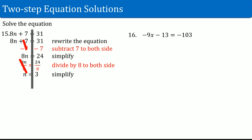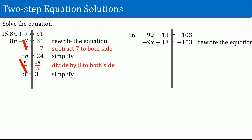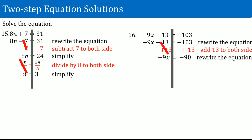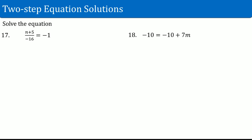Number sixteen: negative 9x minus 13 equals negative 103. Rewrite the equation and draw a line straight down. You have negative 9 times x as well as a minus 13. The outermost thing is the subtract 13 — do the inverse, which is add 13. This cancels out. On the left-hand side you get negative 9x. On the right-hand side, negative 103 plus 13 is negative 90. The inverse of multiply by negative 9 is divide by negative 9. Divide by negative 9 on both sides — that cancels out. You should get x equals negative 10.